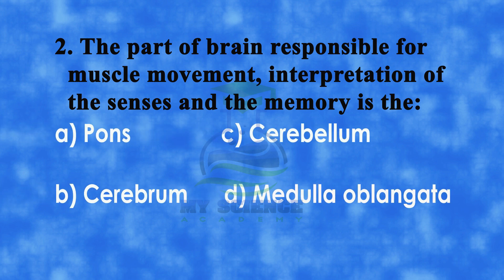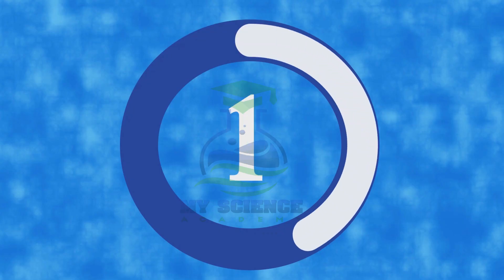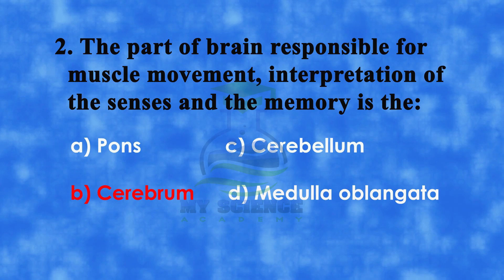Number 2: The part of brain responsible for muscle movement, interpretation of the senses and memory is. A: pons, B: cerebrum, C: cerebellum, or D: medulla oblongata. And correct answer is B: cerebrum.